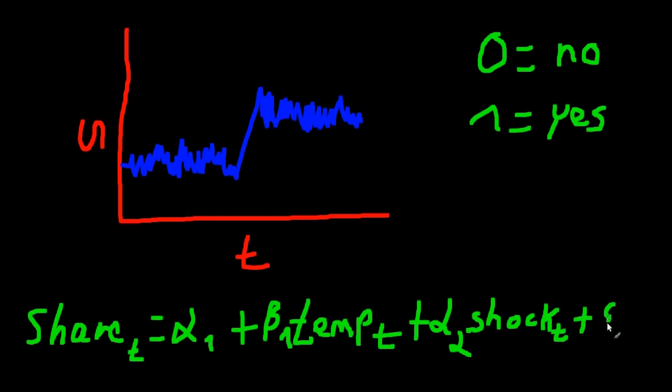And let's include some error term at time T. Now we get the estimates and see that this coefficient alpha 2 is actually statistically significant with an estimate equal to, let's say, 2. What does that mean? Well, it tells us that the oil price shock increased the average of the energy share by 2% or whatever measure we use.